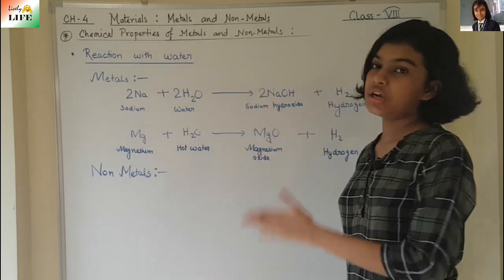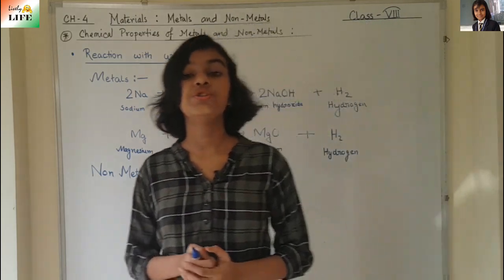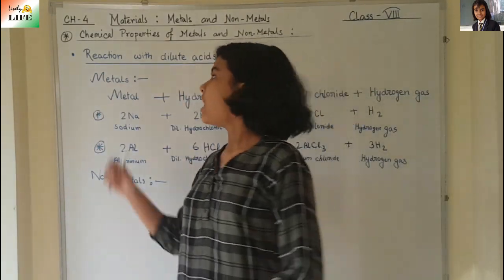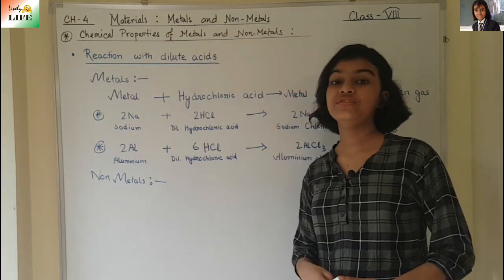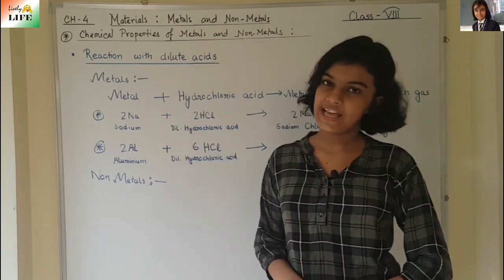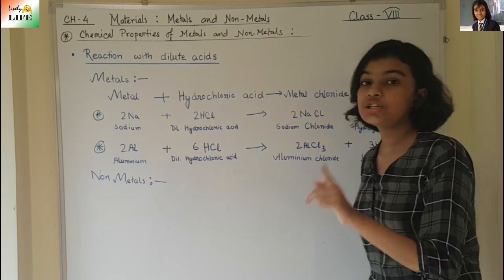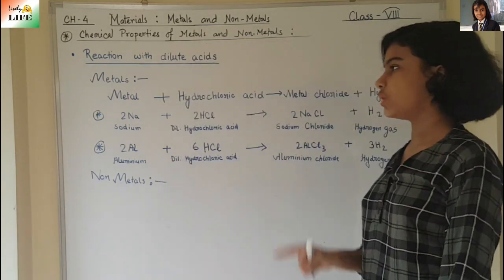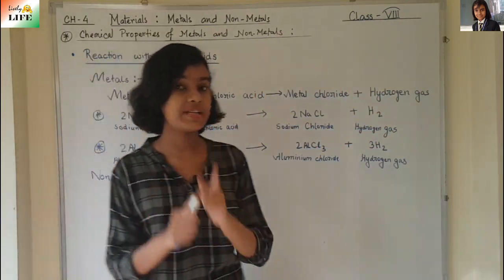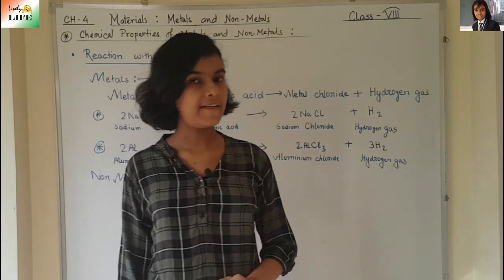So to summarize: non-metals do not react with water, and metals react with water to form a metal hydroxide and hydrogen gas. Now we are going to move to reaction with dilute acids — how do metals and non-metals react with dilute acids. Metals, when they react with dilute hydrochloric acid, form a colorless metal chloride and bubbles of hydrogen gas.